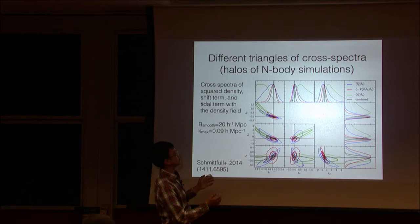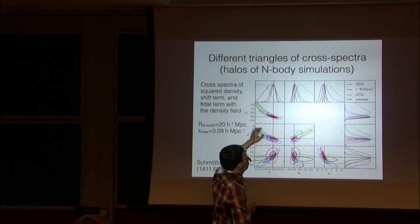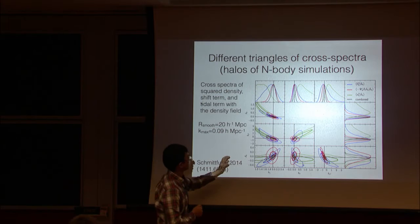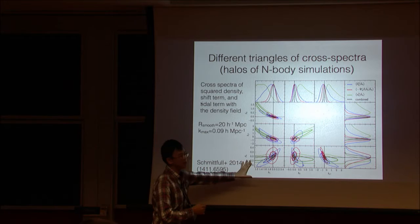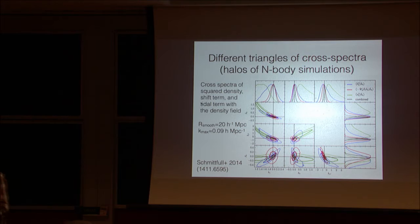So it's, so the green line is for tidal. The red line for the shift term and blue line for the density squared. So it seems that the tidal term always gives you smaller B1 and somewhat higher B2 and non-local bias. So again, the error bar is very large to draw any conclusion. But I think it would be interesting to use this kind of statistics to maybe improve our bias model, depending on their shape.